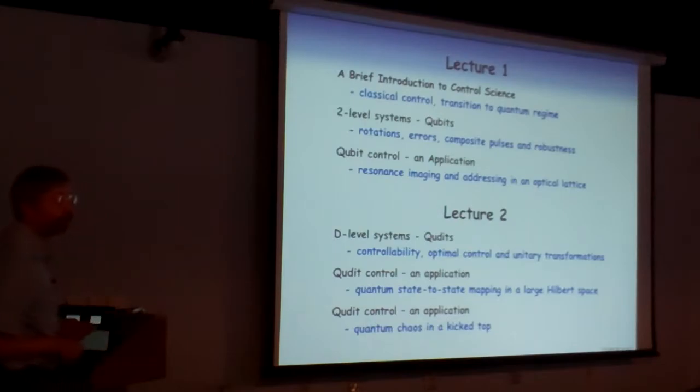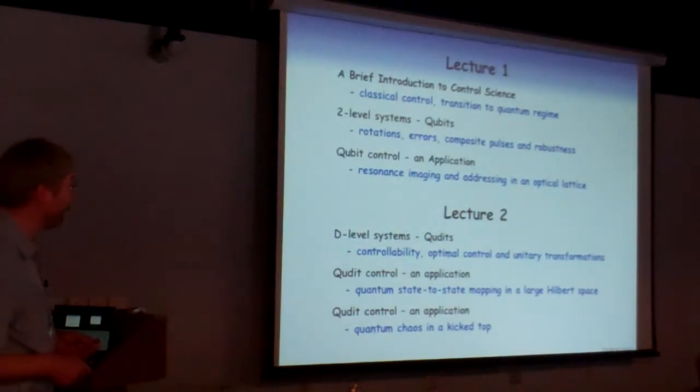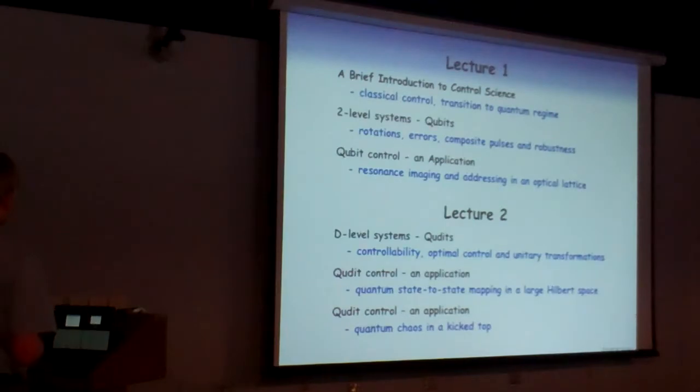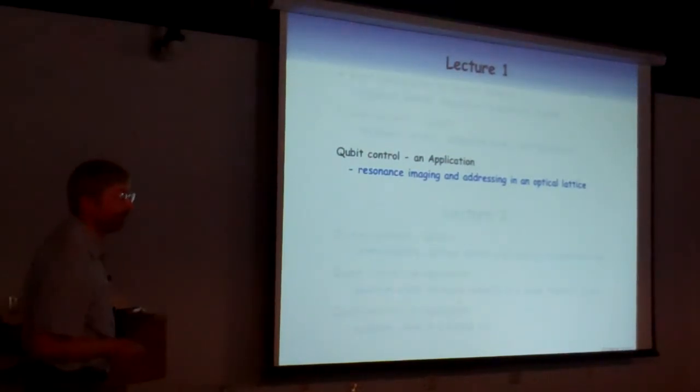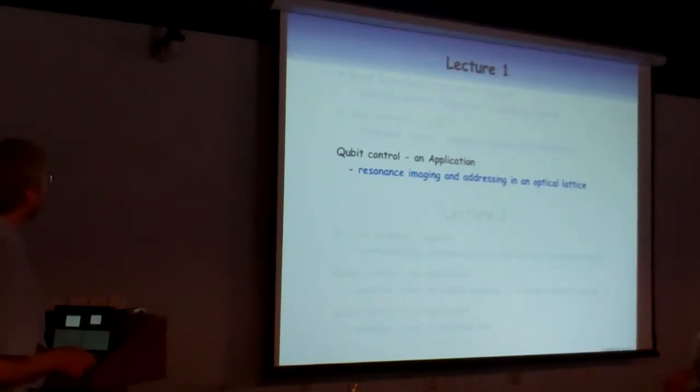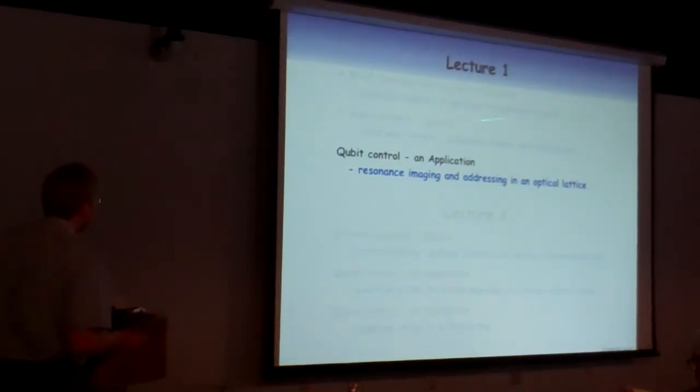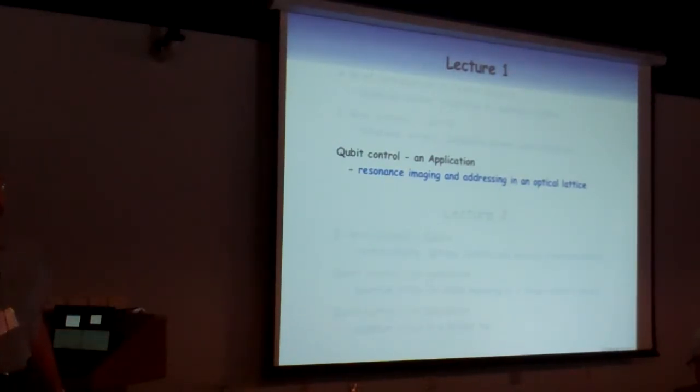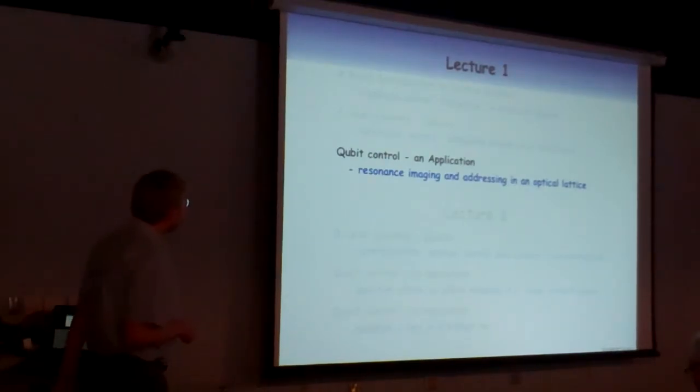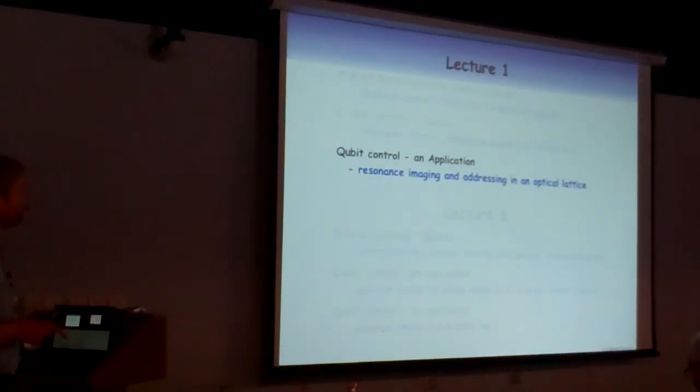Rather than talking about two-level systems, I'll talk about D-level systems. And that, of course, turns out to be a good bit more complicated. But before I do so, I didn't quite finish what I had hoped to say about qubit control in an optical lattice. In particular, there's an aspect of this work that I was going to use as a jump-off point for today's lecture. So I'm just going to go back and continue one last part of Tuesday's lecture and then build off of that.